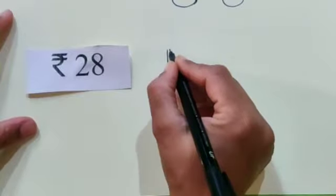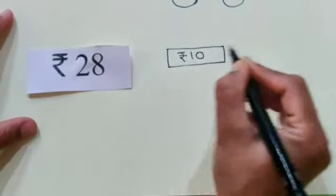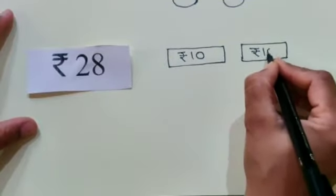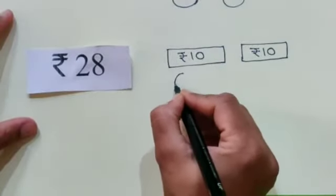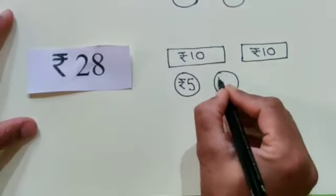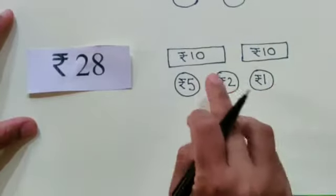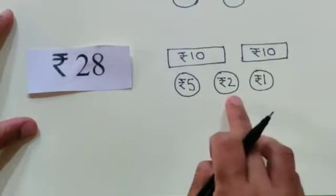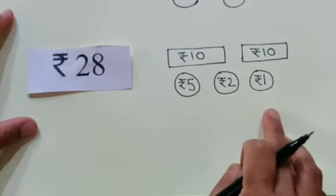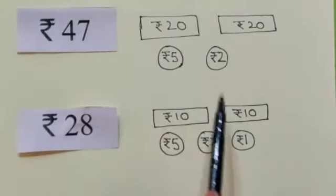Which note will we draw, students? Yes, it is Rs. 10. It is a Rs. 10 note. Now we will draw one more note of Rs. 10. 10 and 10 is 20. Now we will draw a coin of Rs. 5, one more coin of Rs. 2, and a coin of Rs. 1. So: 10 and 10 is 20, plus 5 is 25, plus 2 is 27, plus 1 is 28. In this way, we can draw on our notebooks according to the given values using currency notes and coins.